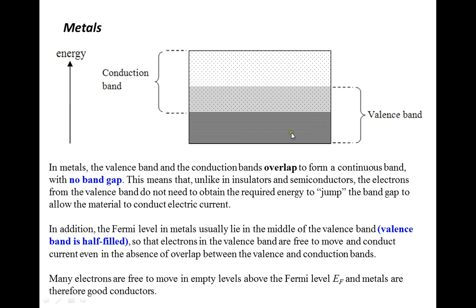This means that the electrons here in the valence band are free to move around because of the space provided and hence conduct electricity. Hence, we say that metals are good conductors of electricity because there are many free electrons.